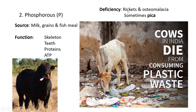Another deficiency is rickets. If there's a calcium shortage, the same thing happens for a phosphorus shortage — rickets. And something called osteomalacia. Technically, rickets and osteomalacia are the same thing, but rickets usually happens in young animals, whereas osteomalacia — also brittle bones — happens in older animals. This usually occurs when an adult cow all of a sudden gets a phosphorus deficiency.